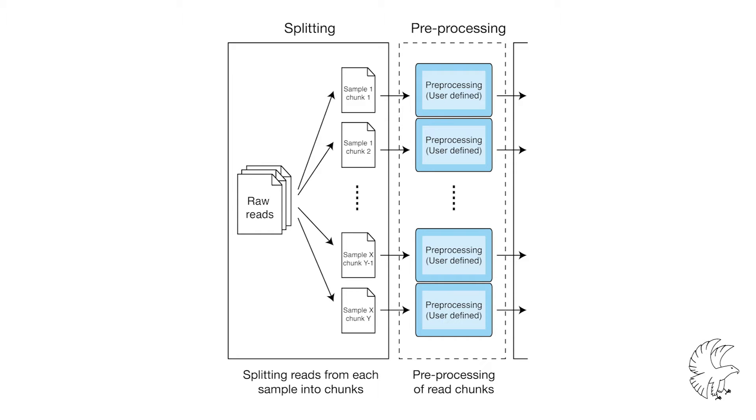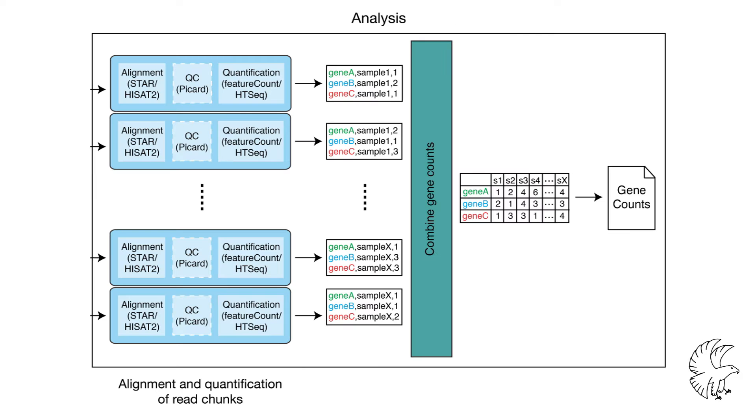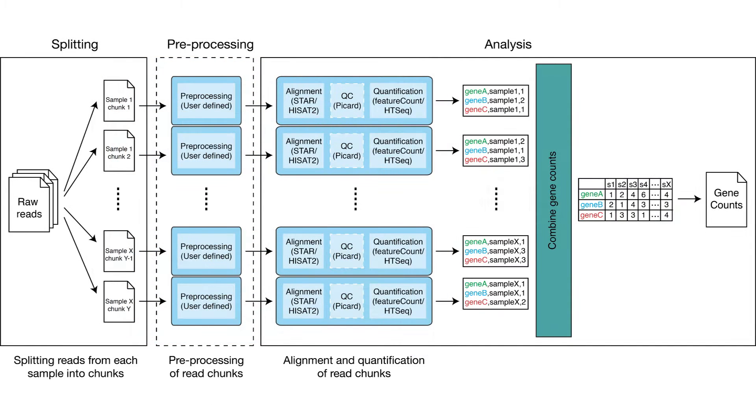Falco utilizes a divide-and-conquer approach, so it takes input reads and splits them into small chunks. We then process these chunks in parallel and run them through an alignment program and feature quantification program. The gene counts from each chunk are then merged together to form gene counts per sample, and this is the outcome of the Falco program.